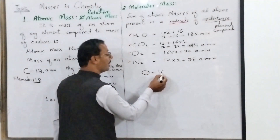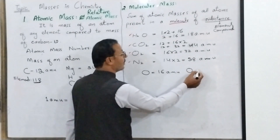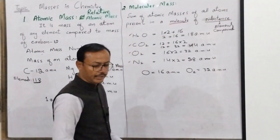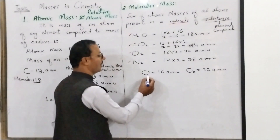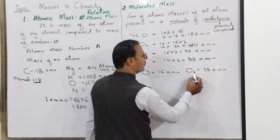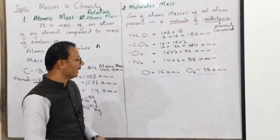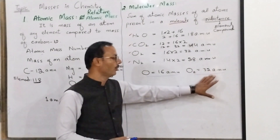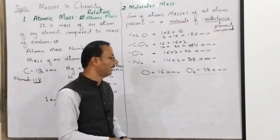Now if there is a confusion: oxygen O is 16 AMU — that is the atomic mass of oxygen. And oxygen O₂ is 32 AMU — that is the molecular mass of oxygen. Students, these are different: oxygen 16 is oxygen's atomic mass, and oxygen O₂ 32 is oxygen's molecular mass. So for one element we can talk about both an atomic mass and a molecular mass if it exists in molecular form.